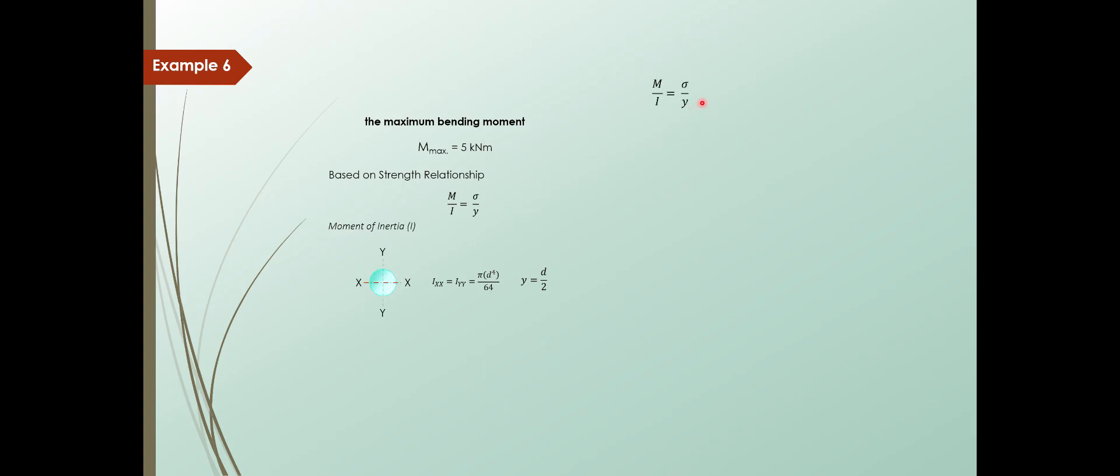So then, come back to this, your strength relationship of the simple bending equation. So substituting your I value and your Y value. So you have your bending stress is 32M over pi D3. So we need to find out the diameter, remember? So manipulating this diameter cube, pull it out, sigma, pull it down. So you have this.